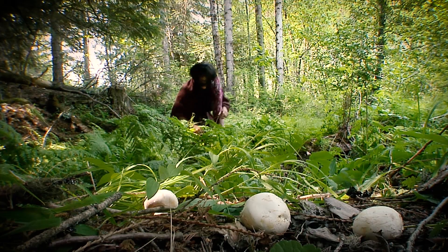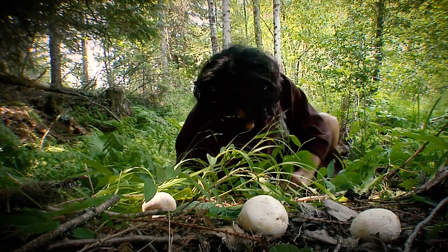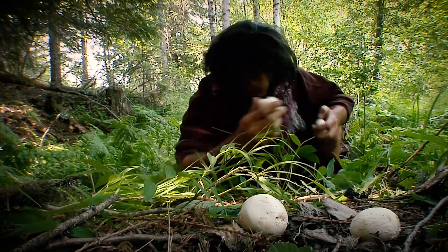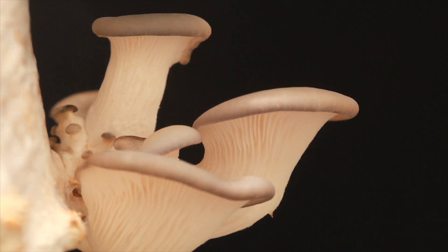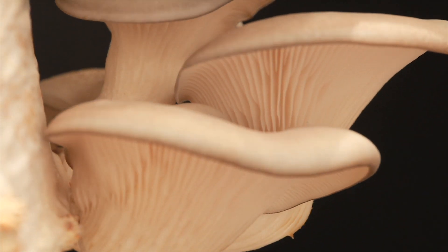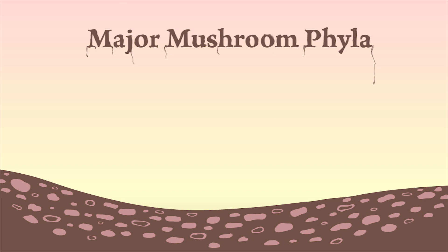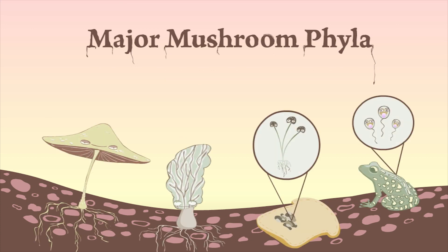It's important to remember as we discuss mushrooms that the mushroom itself is just the fruiting body of the fungi, and not all fungi have fruiting bodies. There are several broad categories that define this kingdom. The major types of fungi are usually divided up by their reproductive structures, and if we look at those different types, we'd find four major groups.